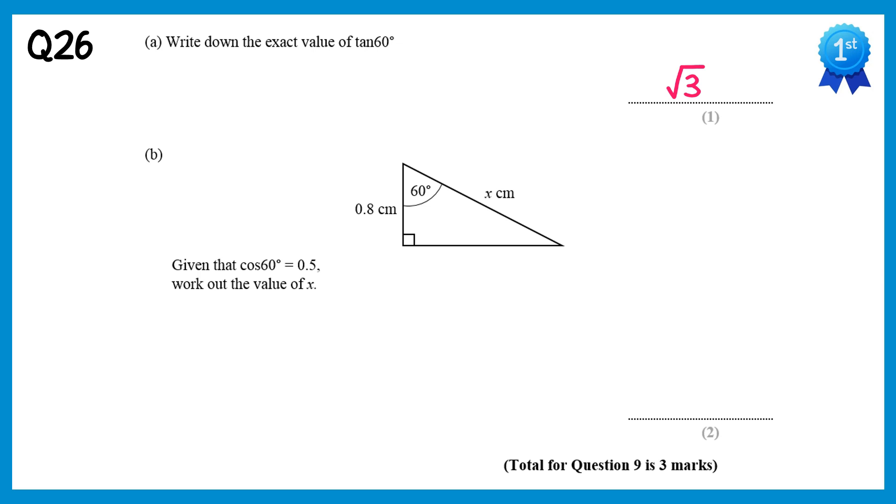For the next part of this question we're going to use trigonometry. So label the triangle first, x is the hypotenuse, and 0.8 here is the adjacent, which means if we look at SOHCAHTOA we're going to need to use cos. So let's write out the cos ratio. Cos of 60 equals the adjacent, which is 0.8, divide by hypotenuse, which is x. We are told in the question though that cos 60 is a half, so if we replace the cos 60 with a half, we have an equation to solve.